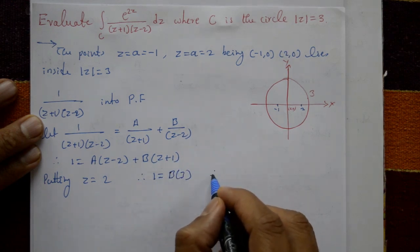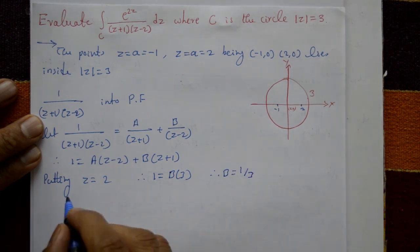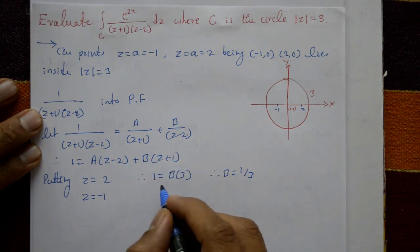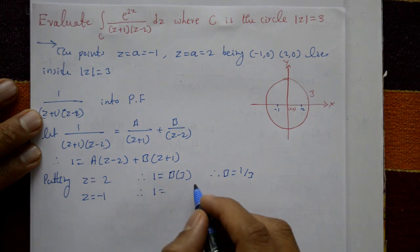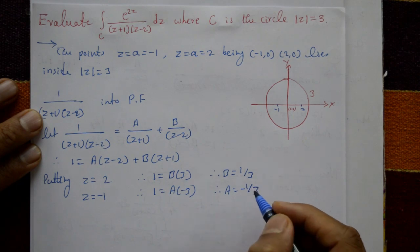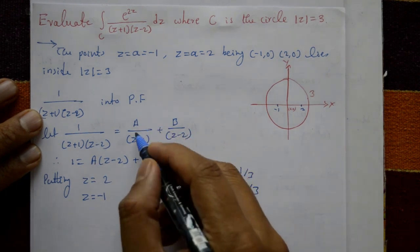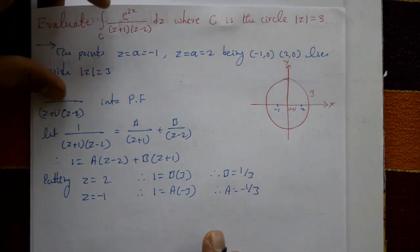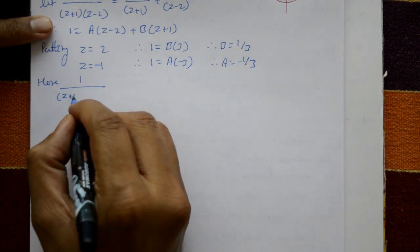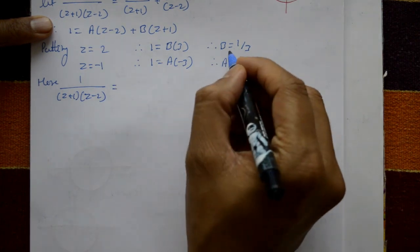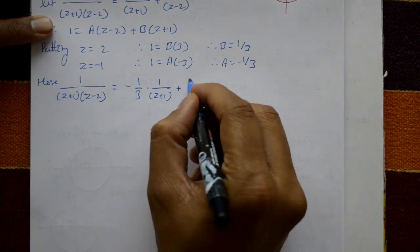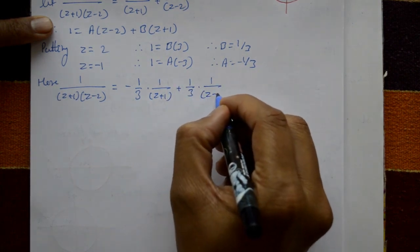Putting z = 2: 1 = B(3), so B = 1/3. Putting z = -1: the B term cancels, giving 1 = A(-3), so A = -1/3. Substituting A and B back, we get 1 over (z+1)(z-2) = (-1/3) · 1/(z+1) + (1/3) · 1/(z-2).